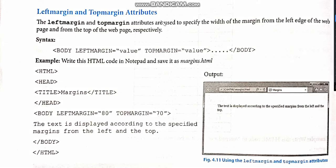The last attributes for the body tag are left margin and top margin, used for putting the left margin and top margin in the web page. You write: body, space, leftmargin, equals to, then give the value — say 50, 80, or whatever space you want to keep on the left. For the top margin, you write topmargin equals to and give the value. In the example shown, the value given is 80 for the left margin and 70 for the top margin. This value is generally measured in points or pixels — for computer, it is either points or pixels. That is how you give the top margin and left margin using these two attributes.